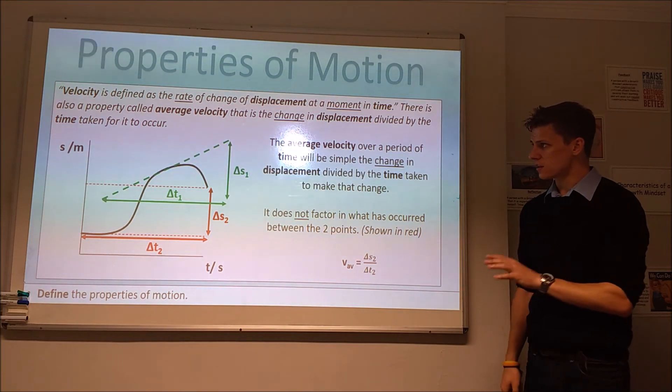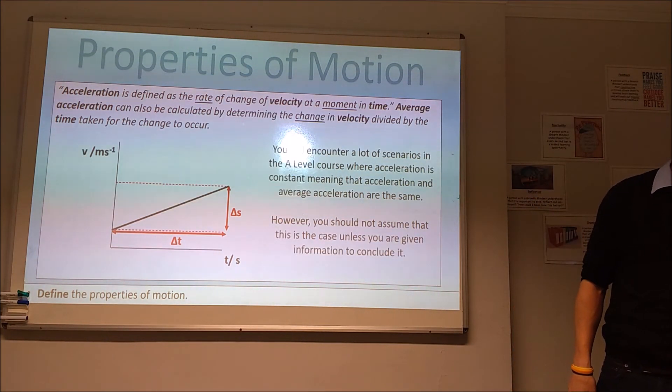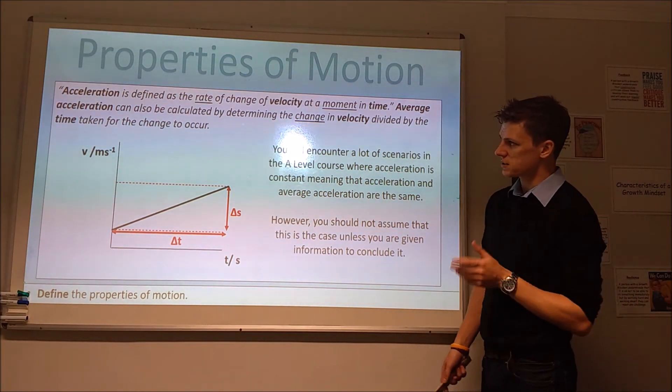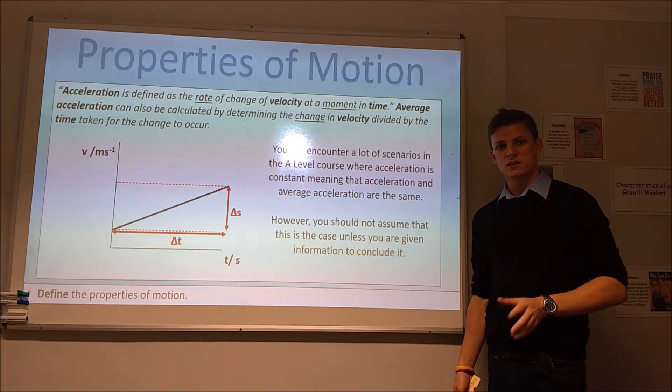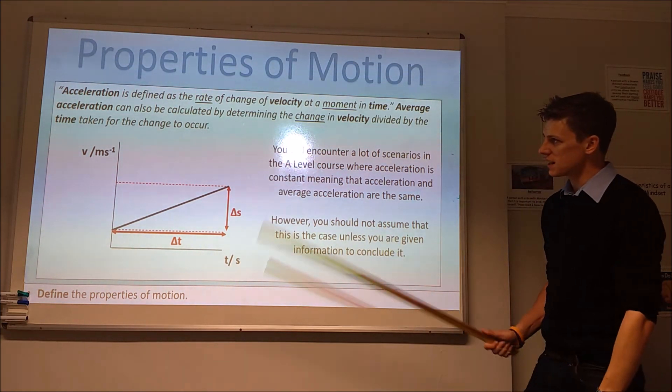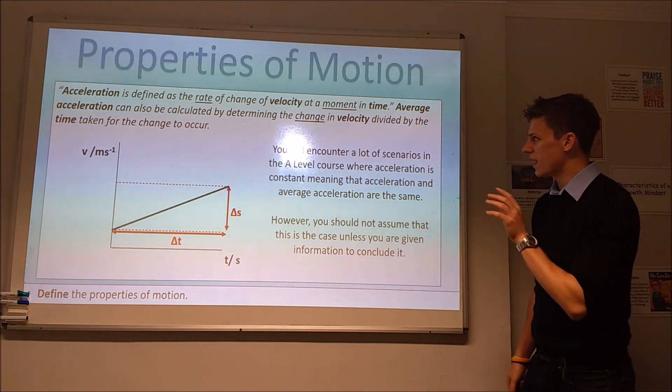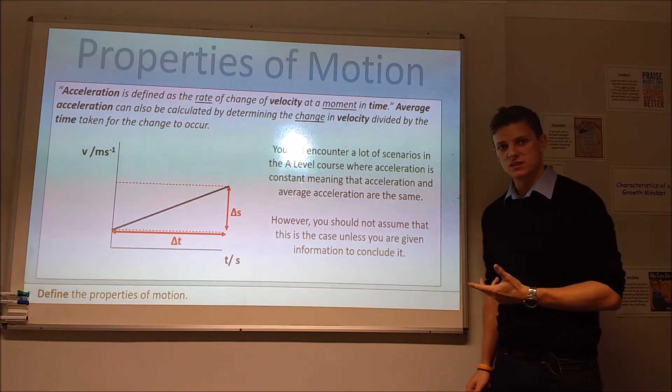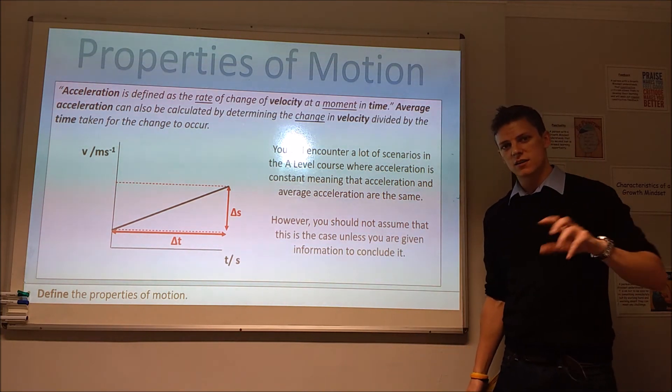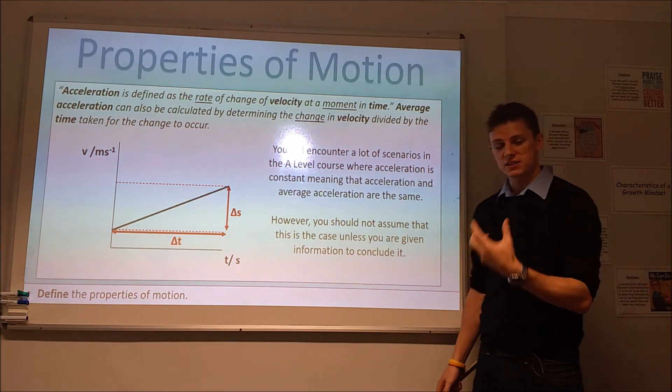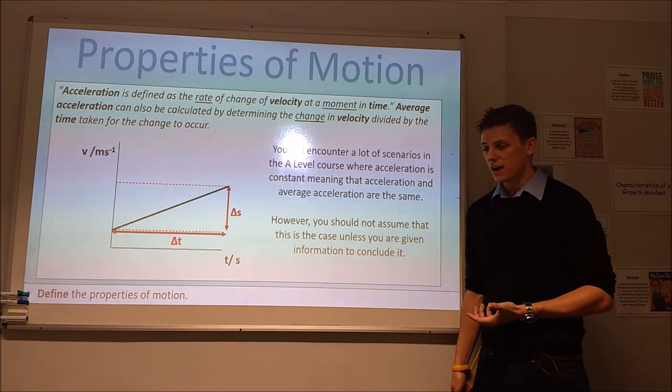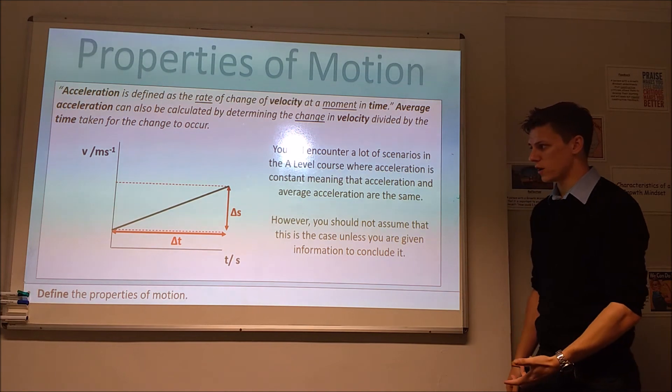That's your velocity, two types of velocity. You may well have come across acceleration before, as in the rate of change of speed. Here we're going to define acceleration as the rate of change of velocity, again at a specific moment in time. This has a size, a magnitude, and a direction, so acceleration is a vector quantity too. And again, we also have this property called average acceleration as well.